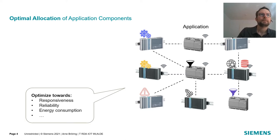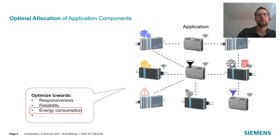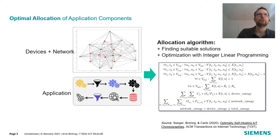This optimization can have different goals. It can, for example, try to maximize the responsiveness of the application, try to maximize the reliability, or — and that's what we focused on in our work — try to minimize the energy consumption of the overall application.